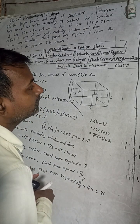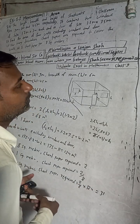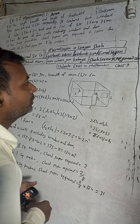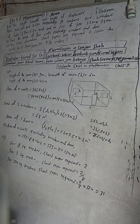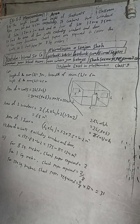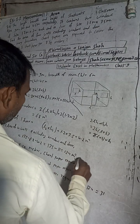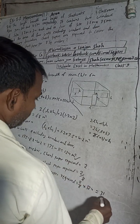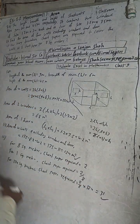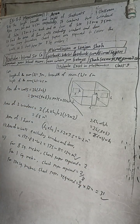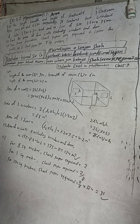The answer 31 matches the book. So we got both answers: part one is 124 square meters and part two is 31 chart papers. Dear students, this is the required solution of this question.